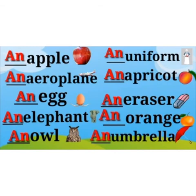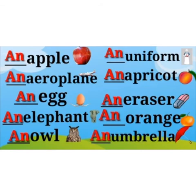Next, owl. O-W-L. Owl. AN owl. O is a vowel. So we should use AN. AN owl. Next, uniform. U-N-I-F-O-R-M. Uniform. AN uniform. Next, apricot. A-P-R-I-C-O-T. Apricot. A is a vowel. So we should use AN. AN apricot. Next, eraser. E-R-A-S-E-R. Eraser. AN eraser. Next, orange. O-R-A-N-G-E. Orange. Starts with a vowel. So we should use AN. AN orange.